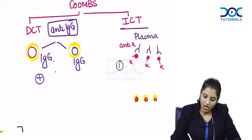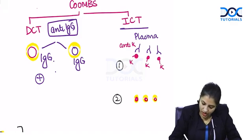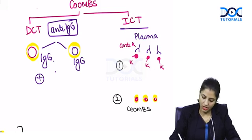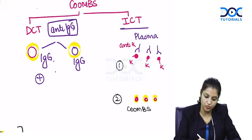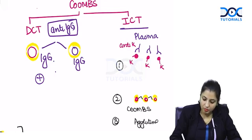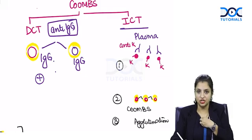After adding cells, we add Coombs anti-sera - that is anti-IgG and C3D. As soon as you add Coombs, these cells bind together and the third step is agglutination. That means my body has Kel antigen.